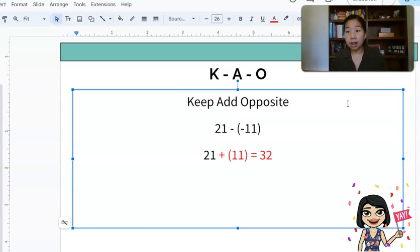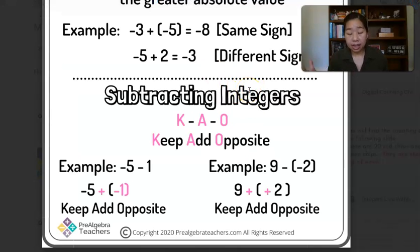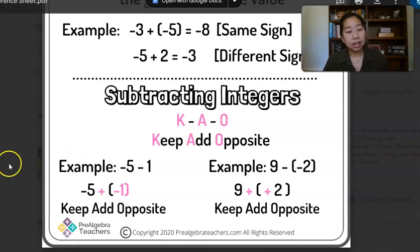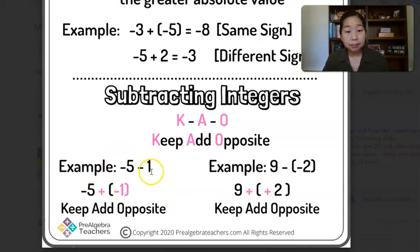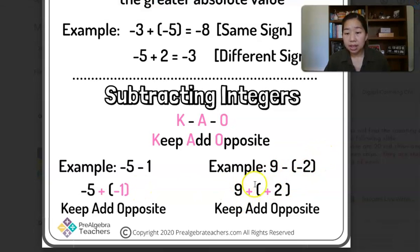After working through a lot of these examples, I go back to my reference sheet and reiterate KAO — Keep, Add, Opposite. For example: negative 5 minus 1 — keep the negative 5, change subtract to add, make the 1 opposite which is negative 1, giving you negative 6. And 9 minus negative 2 — keep the 9, change subtract to add, take the opposite of negative 2 which is positive 2, giving you 11.